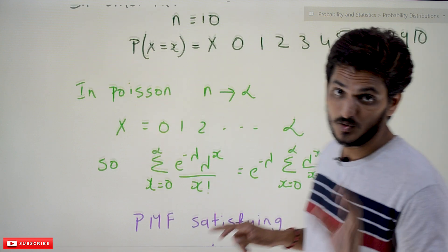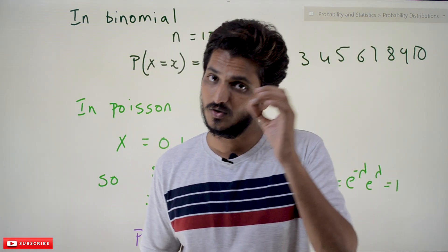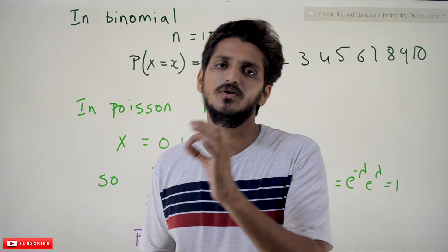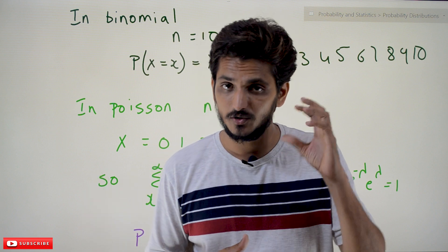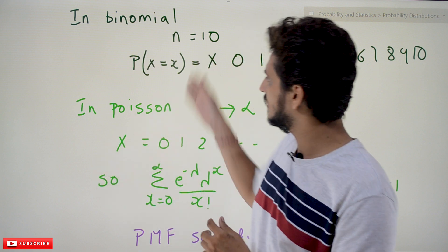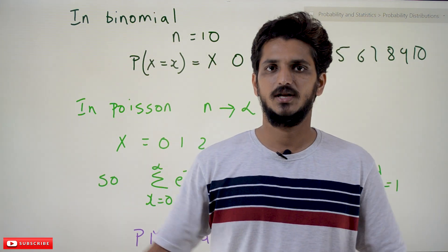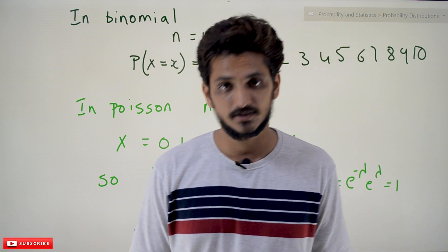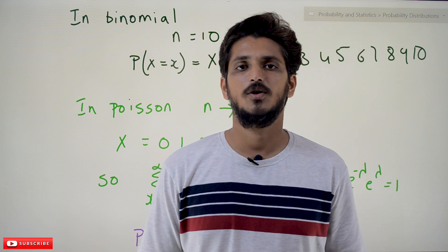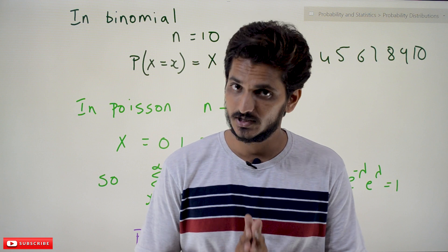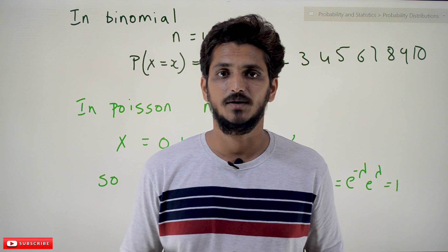In our next class we will discuss with an example why we assumed n tends to infinity and p tends to 0. In this class we derived the probability mass function mathematically. Hope you understood the concept — if you have any questions, please post in the comments below. Thanks for watching; please subscribe to our channel and press the bell icon for the latest updates.